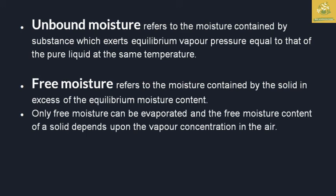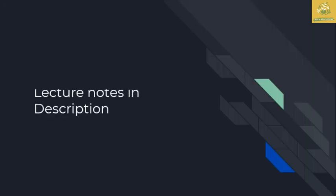Unbound moisture refers to moisture in a substance that exerts an equilibrium vapor pressure equal to that of pure liquid, and it is present outside the cells. Free moisture refers to moisture present in excess of the equilibrium moisture content. Only free moisture can be evaporated during drying. Free moisture content depends upon the vapor concentration in the air.